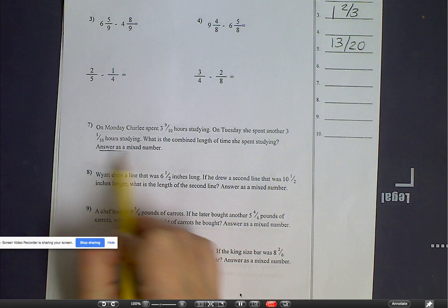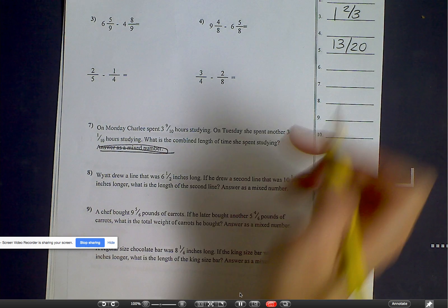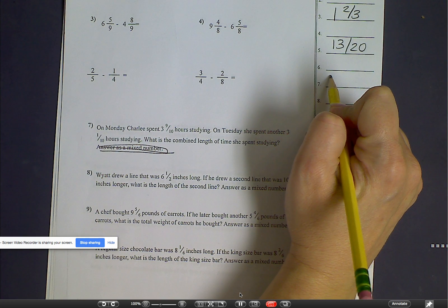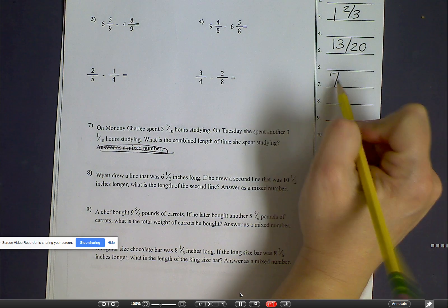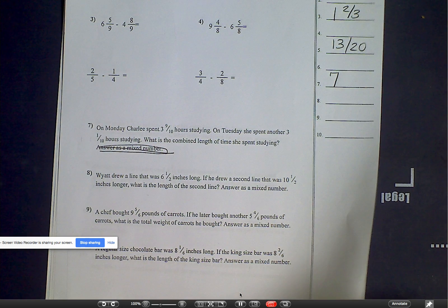Ten over ten equals one. So the answer is actually seven. This says answer as a mixed number. I don't want you answering as a mixed number because that's not in its simplest form. I want you to get used to when you have that ten over ten that it is a whole number. So the answer to number seven is Charlie spent seven hours studying.